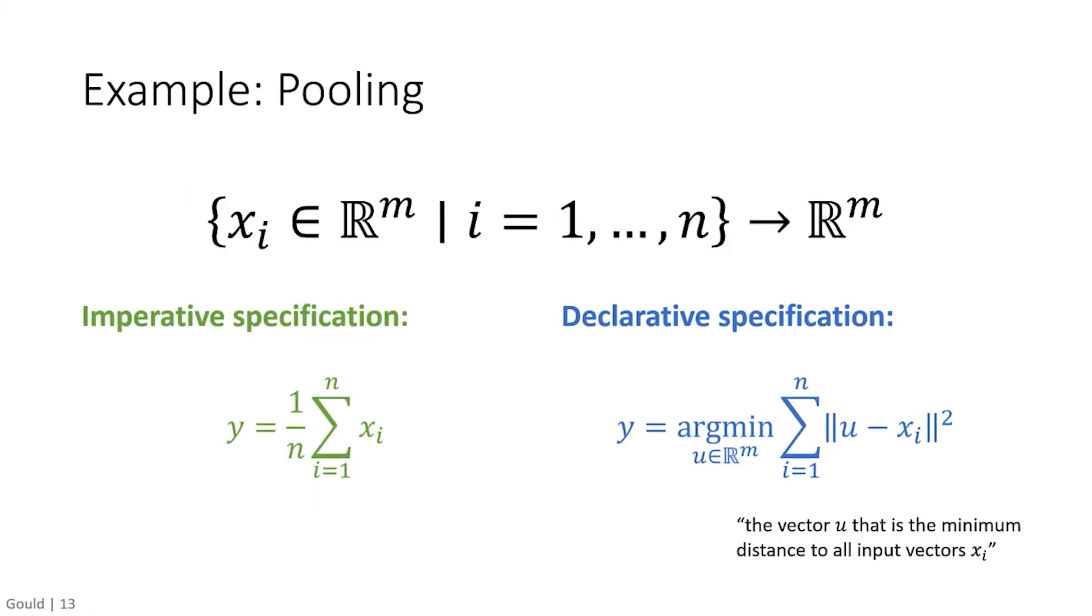Let's look at a simple example, global average pooling. Here we wish to compute the average of a set of input vectors, xi. We can write this problem in two different ways. The imperative specification has an explicit formula for the output y as a function of the input x. The declarative specification writes the relationship between y and x as an optimization problem. The advantage of thinking about pooling in this way is that it allows us to replace averages with robust averages by minimizing over a robust penalty function instead of the L2 distance. This example shows that some operations can be considered either imperatively or declaratively. It turns out that all imperative nodes can be expressed as declarative nodes. But you don't have to do this.